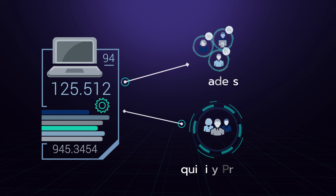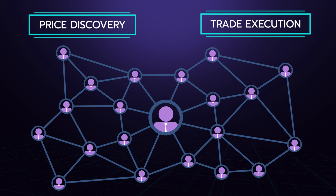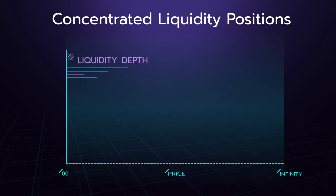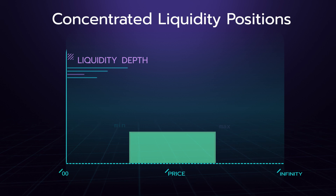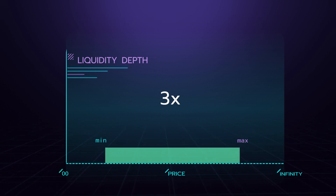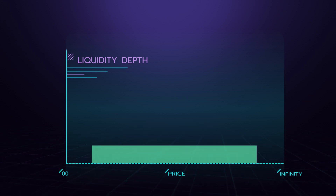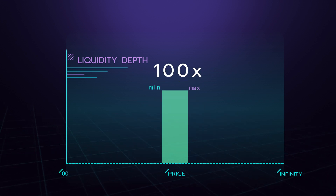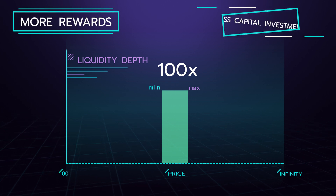It is this interaction of traders facilitated by liquidity providers, using the exchange's smart contract without the intervention of a middleman, that makes price discovery and trade execution decentralized. Genius DEX uses concentrated liquidity positions, which allow liquidity providers to allocate their capital to specific price ranges. This concentrated effect provides LPs with higher capital efficiency and higher yield opportunities, as their capital is stacked in a smaller range where trades are more likely to occur.